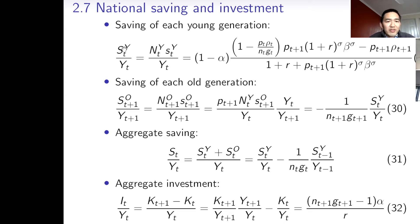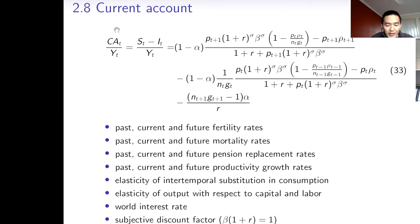Given individual saving, we can derive national saving, which consists of the saving of each young generation and each older generation. We also derive investment in terms of output. Finally, we obtain the current account, which reflects the difference between national saving and investment. This is an analytic solution to the current account in this small open economy — my favorite part of this paper. This is my contribution to the literature, going beyond just a literature review.